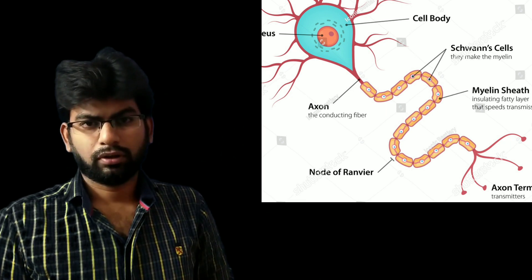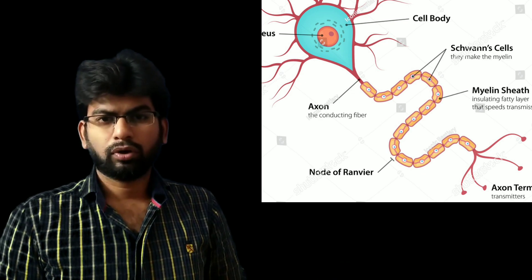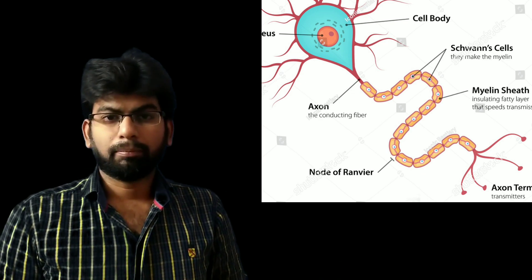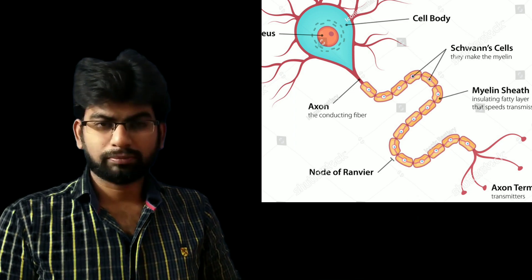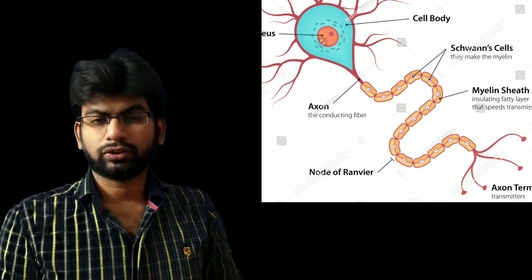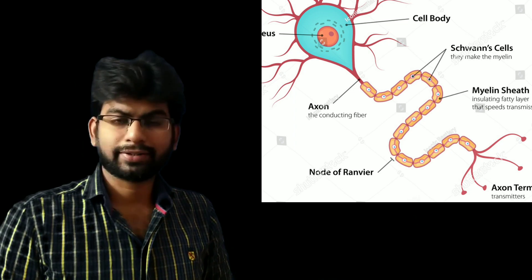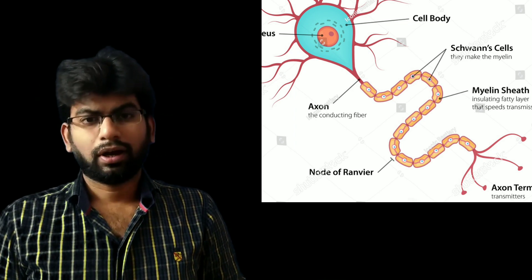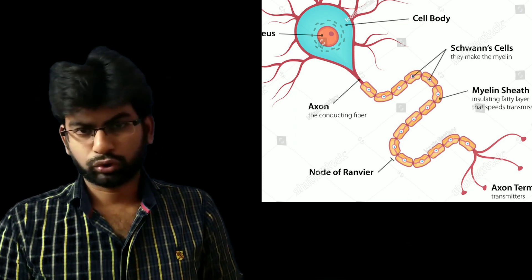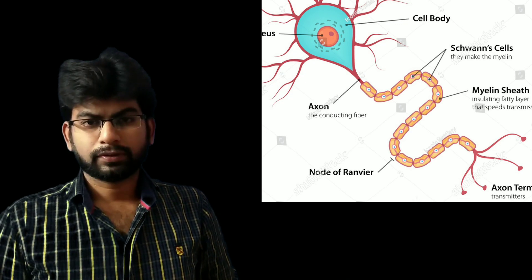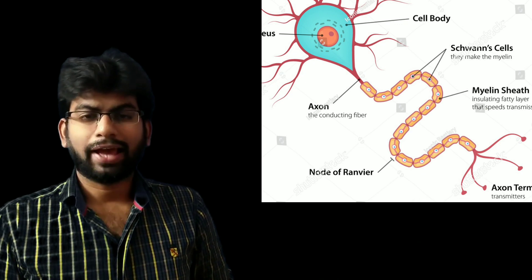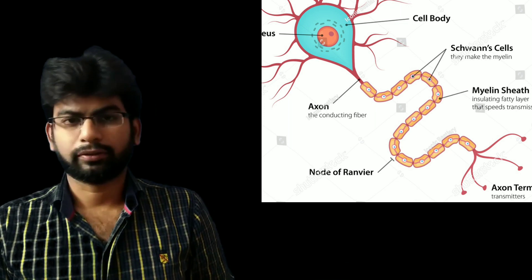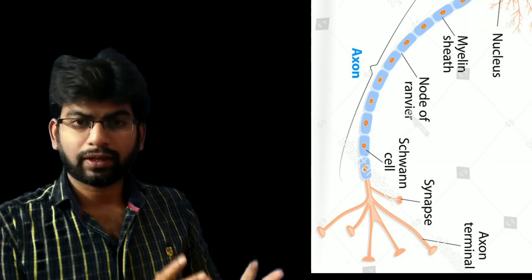In between the myelin sheath there are breaks — those are called node of Ranvier. So our nerve cell parts are: first, the cell body.